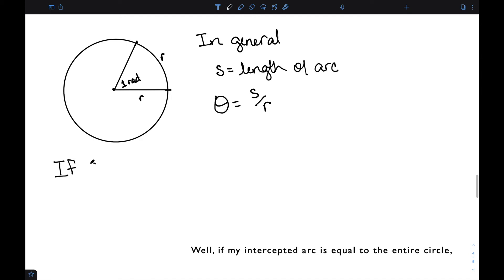If my intercepted arc is equal to the entire circle, we're looking at the distance outside the circle. So this would be 2 pi r.